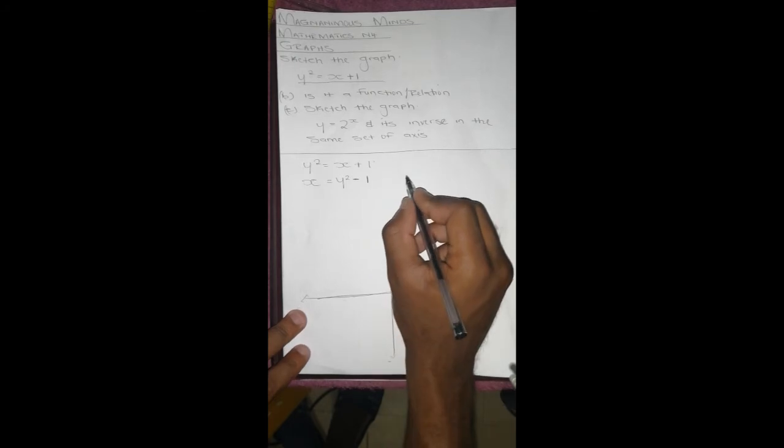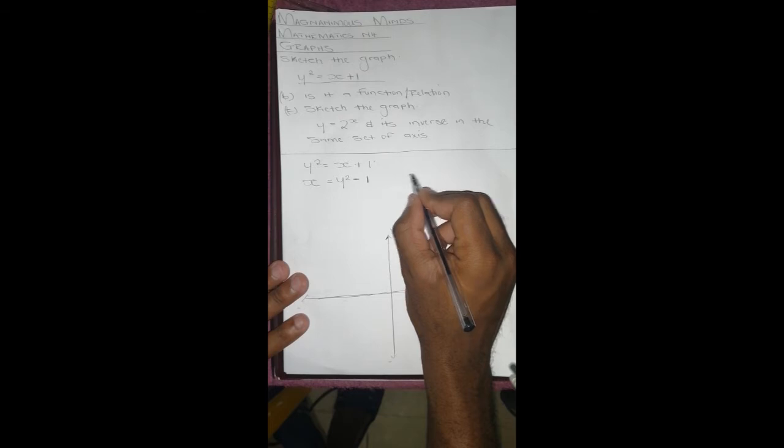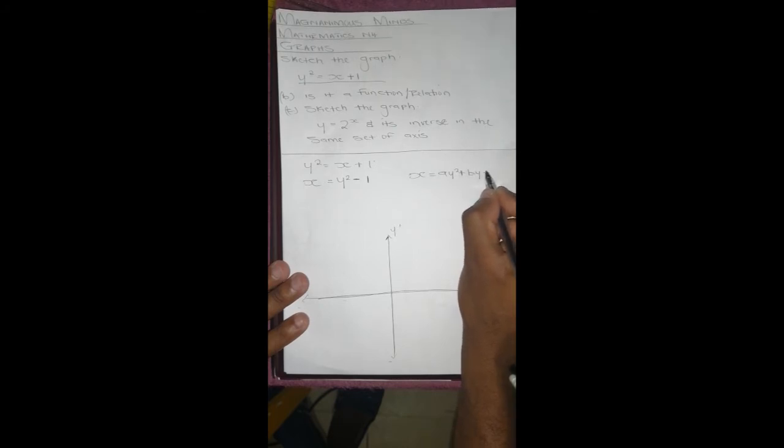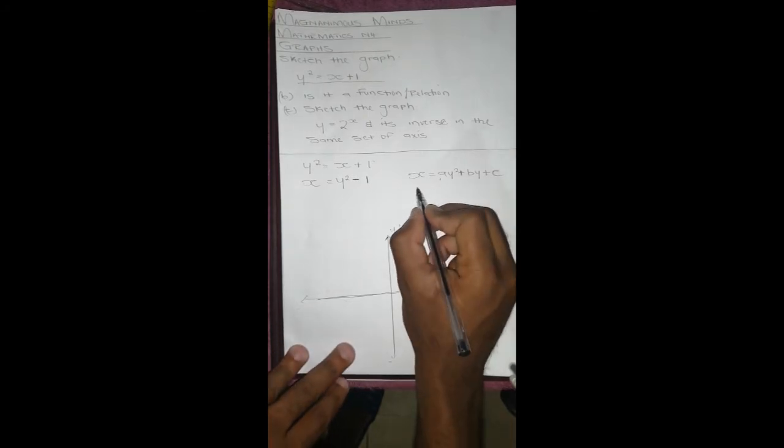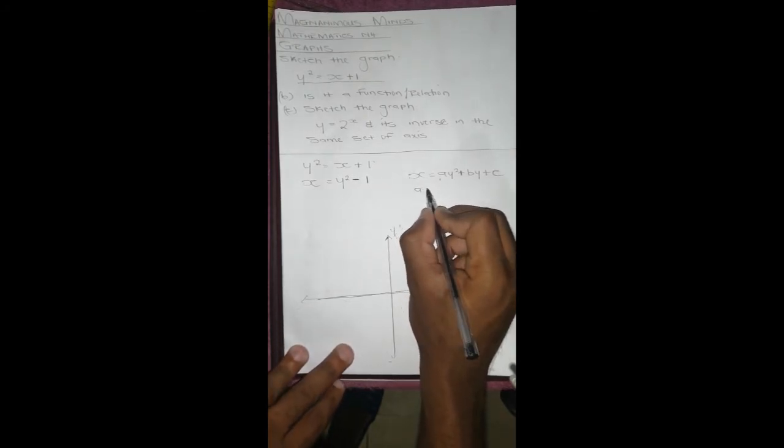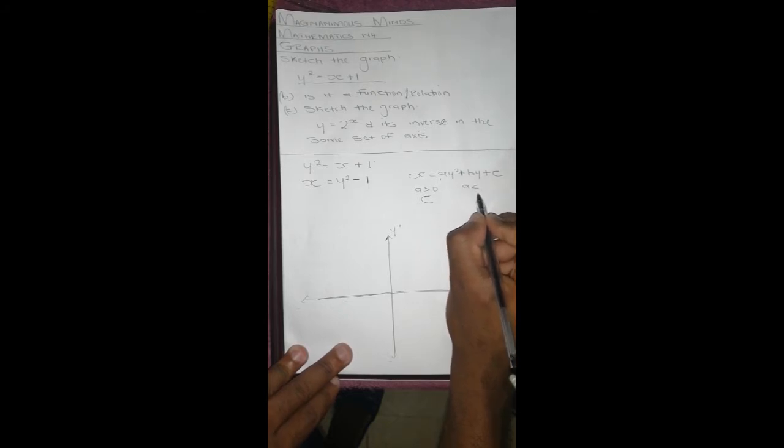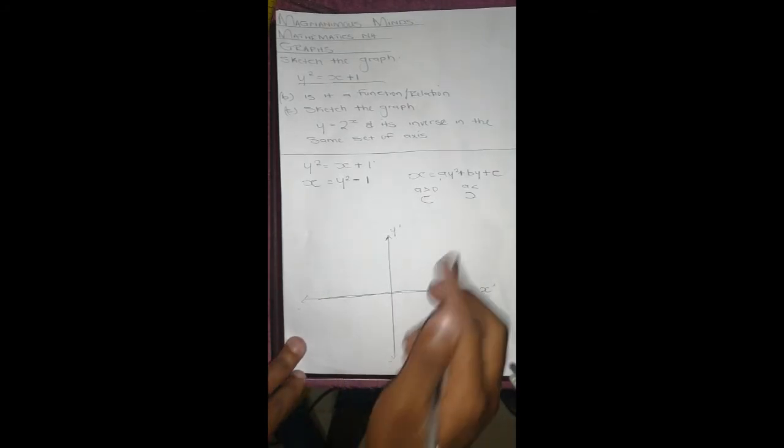Looking at the standard form of a parabola, in this case it's going to be x equals a y squared plus b y plus c. Our a indicates where our parabola is facing. When a is positive, the parabola is going to face that way, and if a is negative, our parabola is going to face that way. In this case, our a is positive, so our parabola is going to face that way.